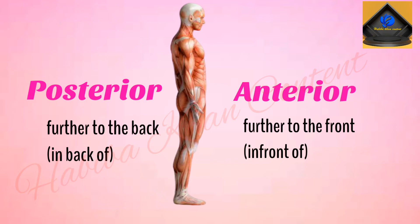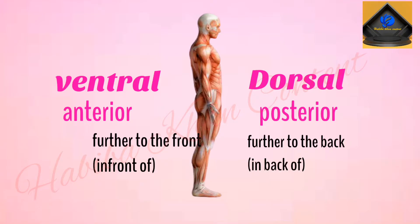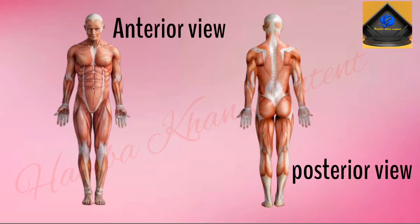Next is anterior and posterior. Anterior means further to the front, or in front of. Posterior means further to the back, or in back of. So we would say the lungs are anterior to the spine, or we could say that the spine is posterior to the lungs. Sometimes the terms ventral and dorsal are used in place of anterior and posterior, where ventral means anterior and dorsal means posterior.